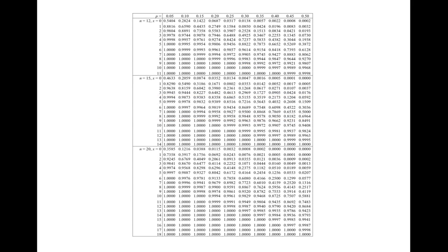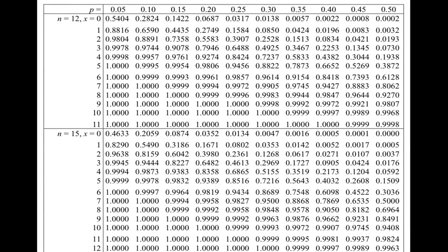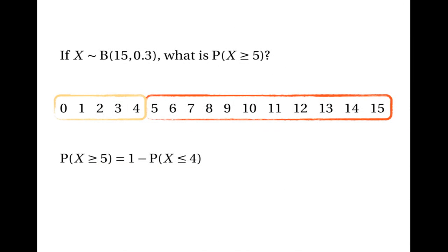We can find this in the probability tables. We look for where n equals 15 and p equals 0.3. We find the row that begins with 4 and follow it along until we hit the right column. This tells us that the probability that X is less than or equal to 4 is 0.5155. So we do 1 take away 0.5155, which gives us the answer 0.4845.